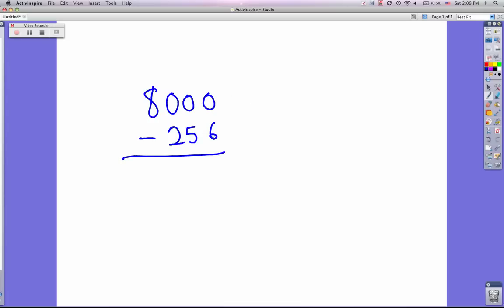Okay, again, 0 minus 6, can't do it. You're going to draw a box around the 800 because you're coming to regroup from a zero, and we're going to change this to 1 less than 800, which of course is 799. Then 799, that's 10. 10 minus 6 is 4, and 9 minus 5 is 4, 9 minus 2 is 7, 7 take away nothing is 7. So 7,744 is the solution to this one.